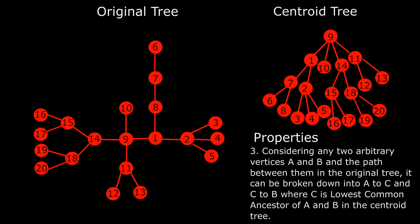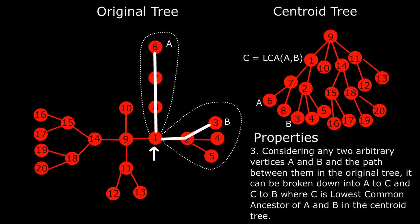Lastly, the most important property that we will use to answer the queries is that considering any two arbitrary vertices A and B and the path between them in the original tree, it can be broken down into A to C and C to B where C is the lowest common ancestor of A and B in the centroid tree. It's actually not hard to see that given arbitrary vertices A and B and their lowest common ancestor C in the centroid tree, both A and B lie inside the path of which vertex C was the centroid of and they both were first separated into different parts when vertex C was removed.